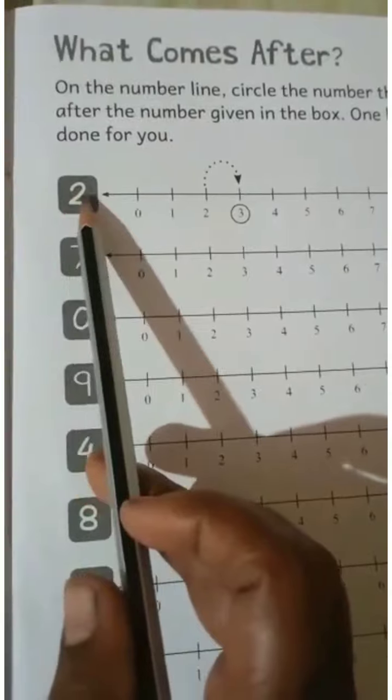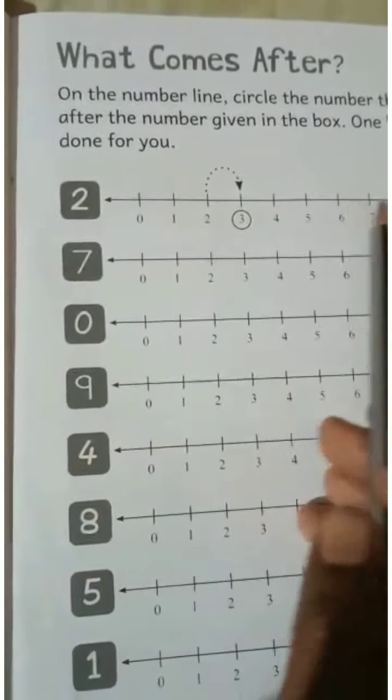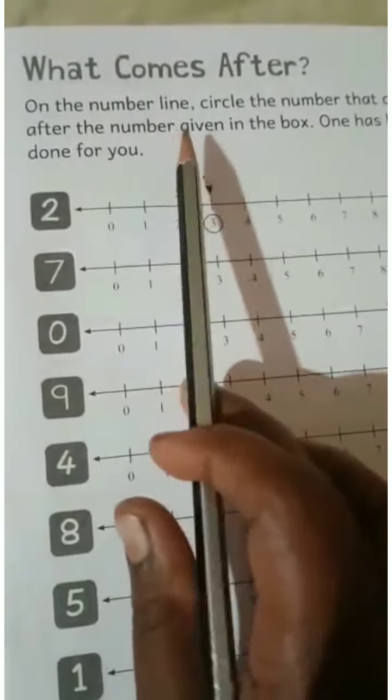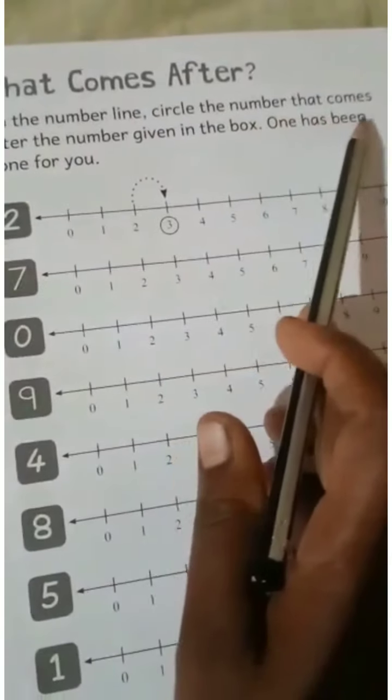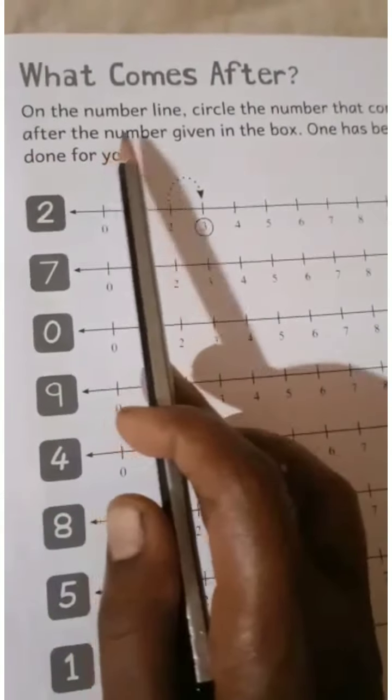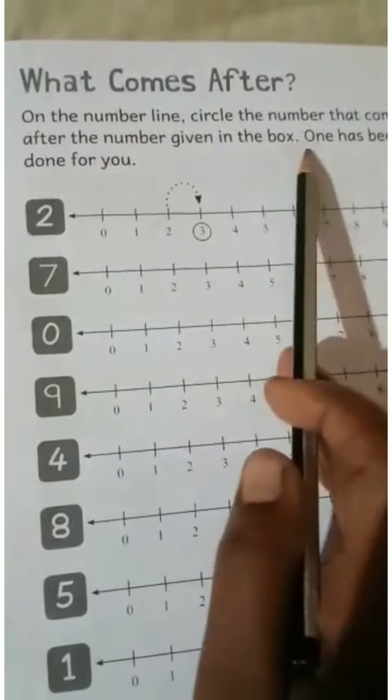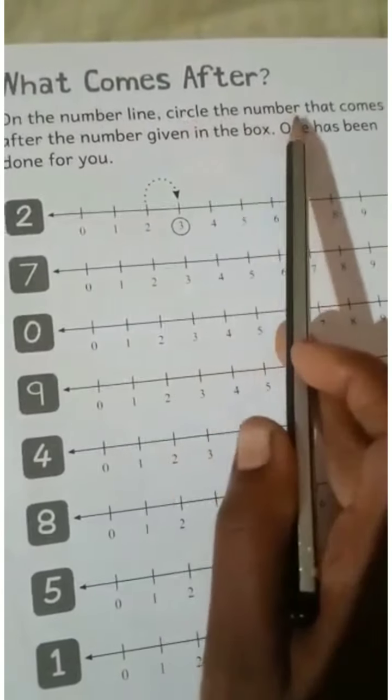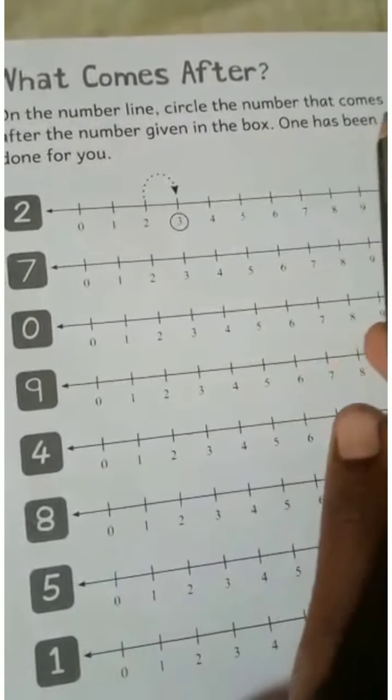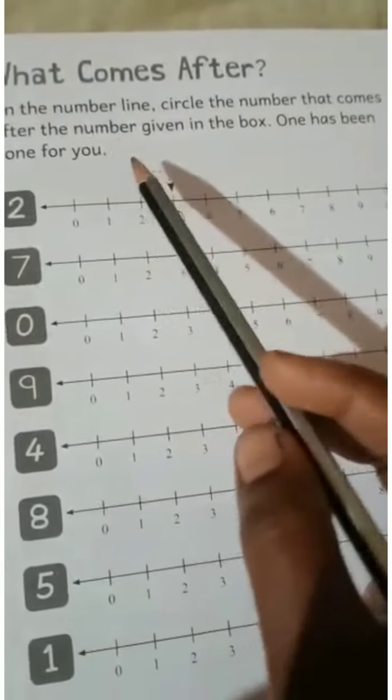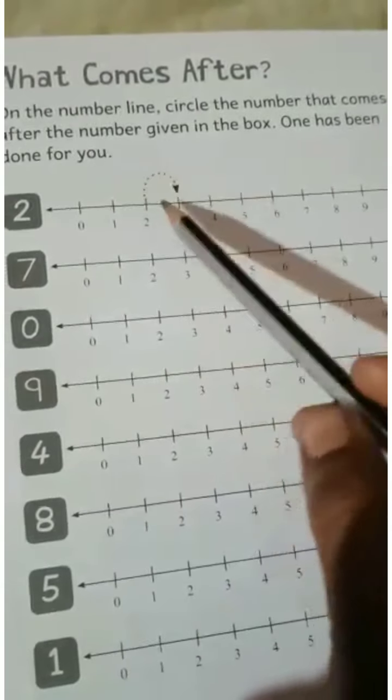Under number line, there is a circle by zero. Circle the number that comes after the number given in the box. Circle the number that comes after and paravarty sankhya upare circle.